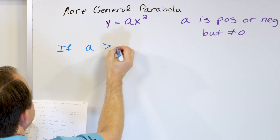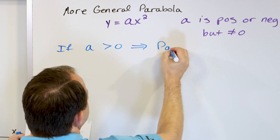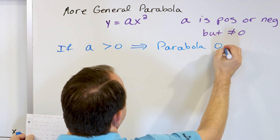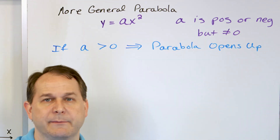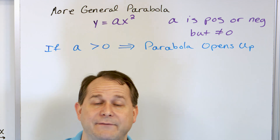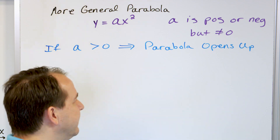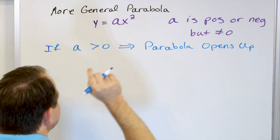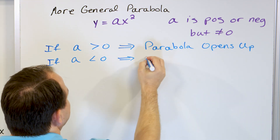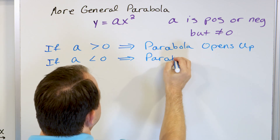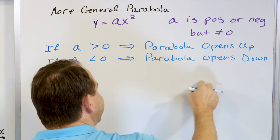If the variable a happens to be positive — bigger than zero — then the parabola opens up. If a is less than zero, which means it's a negative number, then the parabola opens down, which means it's a frowny face kind of problem.